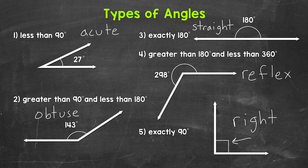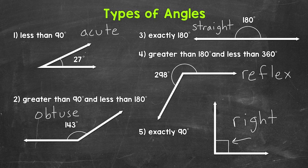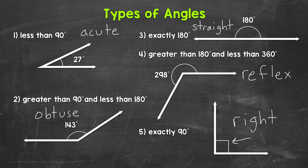It's common just to see a square in the corner of a 90 degree angle without the number 90 written. So that's something to be aware of. Whenever you see that square, it's a 90 degree angle.